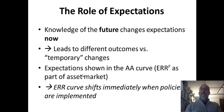The thing that's also important is expectations. Knowledge of the future changes expectations now, and it changes behavior now, and you get different results for temporary changes versus permanent changes. Expectations show up in the AA curve because of expected rate of return, in the ERR foreign. So the ERR curve is going to shift immediately when policies are implemented. For example, if there's an inflationary policy, if the money supply expands, investors know there's going to be inflation in the future, and they're going to move their money now. They're going to think the foreign country is better than the country that's going to have inflation.